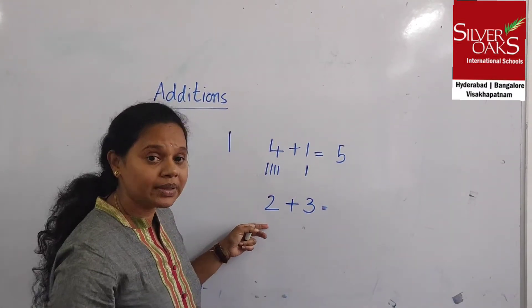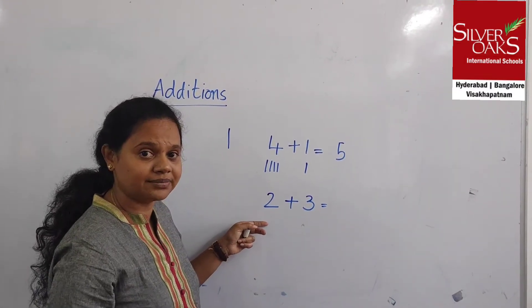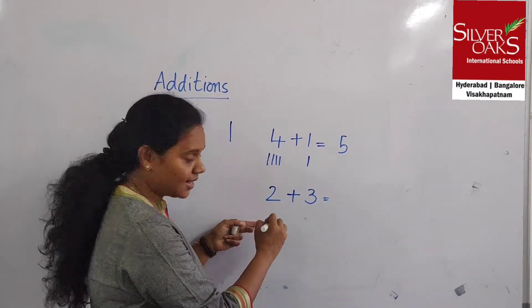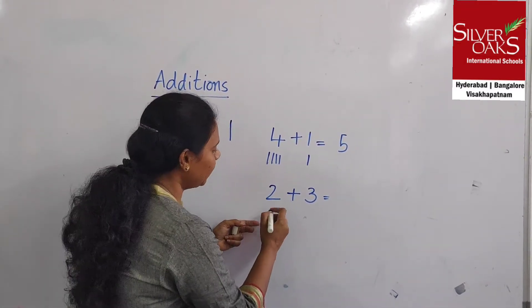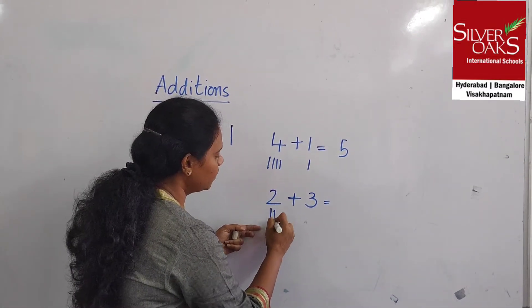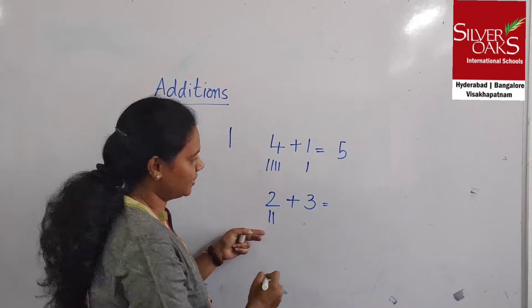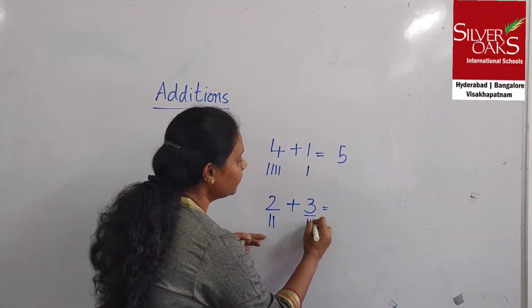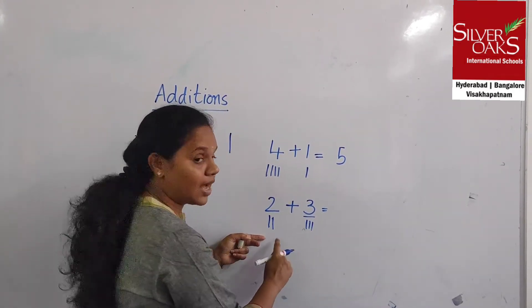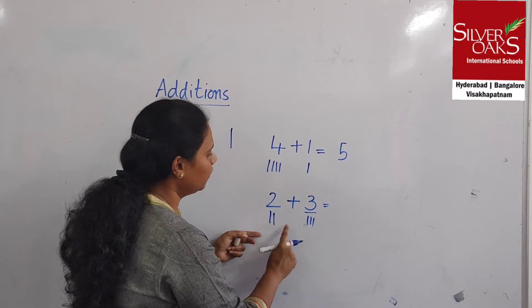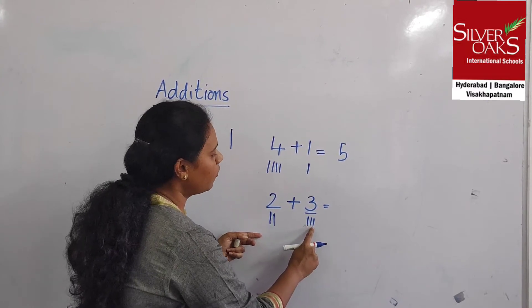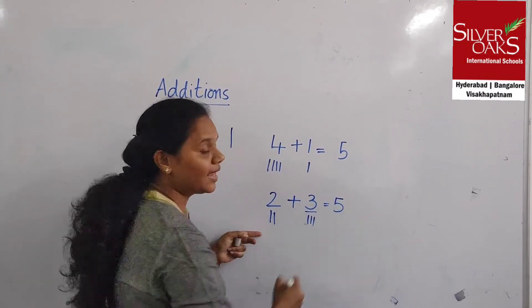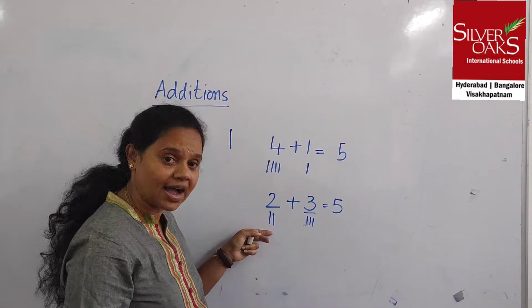What will be the answer? Shall we draw lines and see the answer? For 2 we need to draw 2 lines. For 3 we need to draw 3 lines. So the answer will be 1, 2, 3, 4, 5. So the answer is 5.